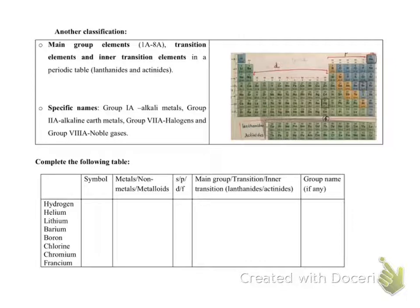This is known as the modern periodic table, where the elements are arranged based on the increasing atomic number. We will discuss atomic number later. So this is the modern periodic table.